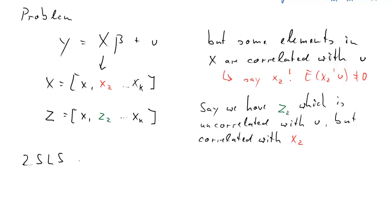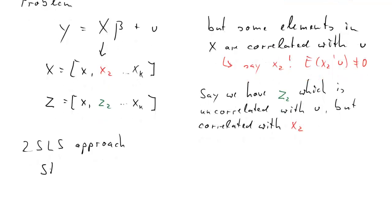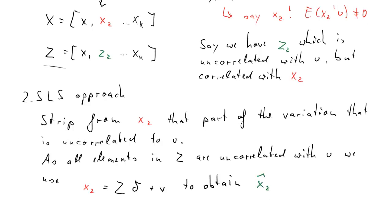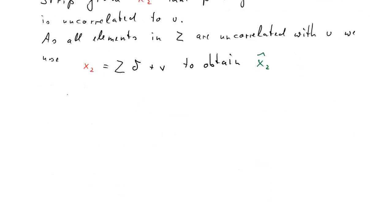So what is the two-stage least squares approach to this issue? The first step really we need to achieve is that we want to strip from our variable x2 that part of the variation that is uncorrelated to the error term u. So how do we achieve that? As all the elements in our matrix Z are uncorrelated with u, we can use a regression approach to extract that variation. We think about the model x2 being a function of all the Z's, and to obtain the variation in x2 that is correlated with u, we find all the variation that's correlated to the Z's.